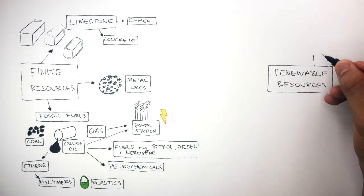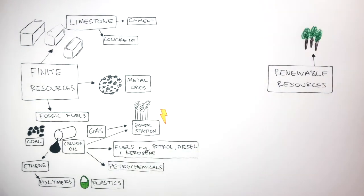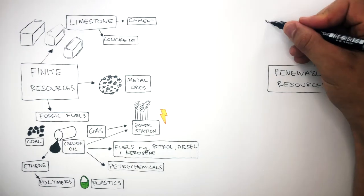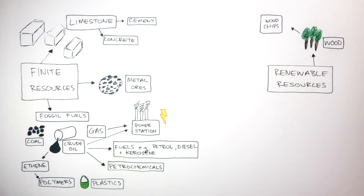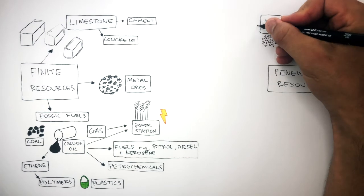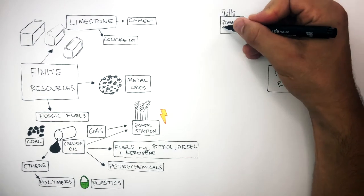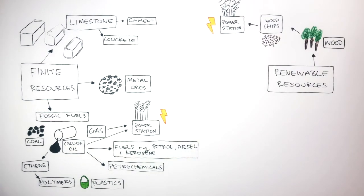A renewable resource used all around the world is wood. This wood can be made into wood chips. Wood chips are small pieces of wood, and these wood chips can be used in power stations, where they're burnt to generate electricity. As long as the wood is replaced at the same rate as the wood chips are burnt, then the wood can be renewable.